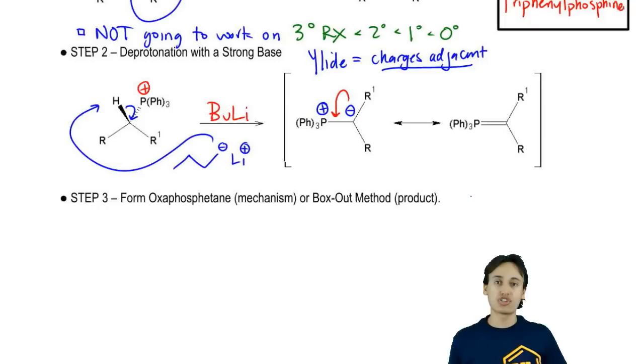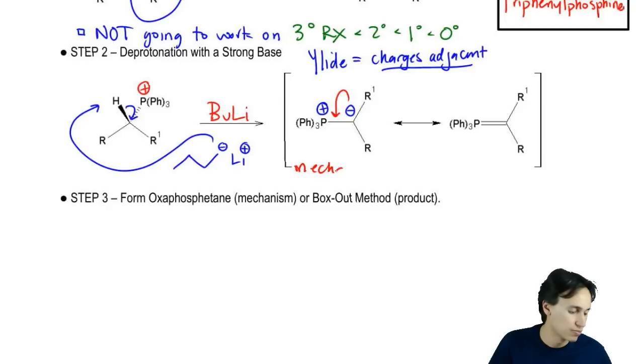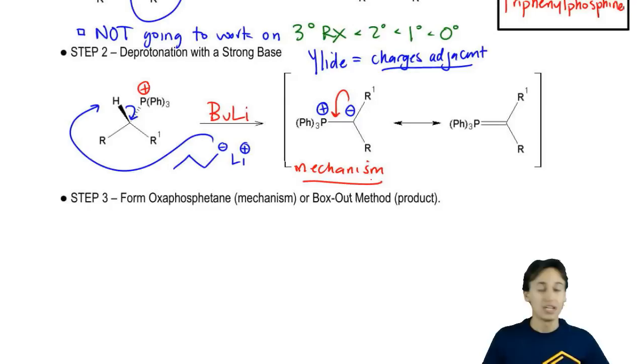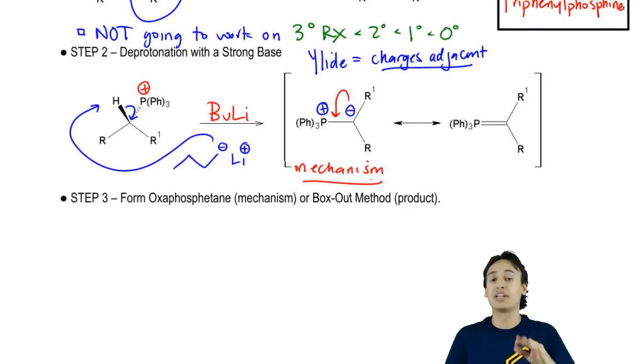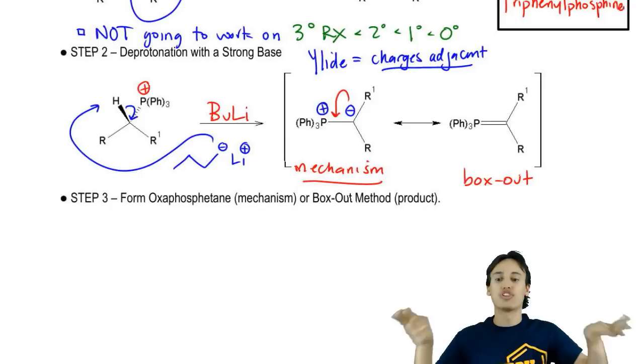These two different resonance structures are good for two different things. This resonance structure is the one, the first one, the ilid, is the one that I want to use for my mechanisms. If you're asked to draw the full mechanism, this is the one you use. If you just have to determine the product, if you're given an alkyl halide with butyllithium, etc., and it just says predict the product, then by far definitely use this one because this one is going to work for your box out. This one you can just put next to your carbonyl, draw your box and you're done. The ilid, however, that's good for the whole mechanism. Now let's move on to the last step.